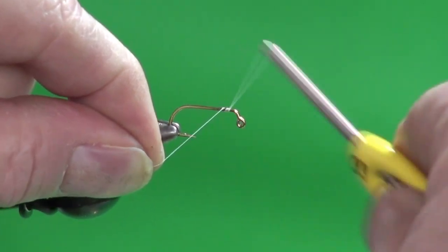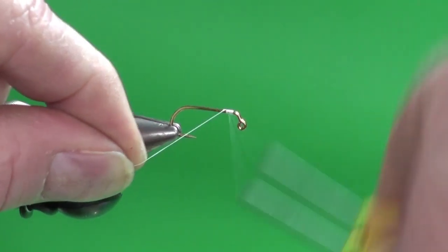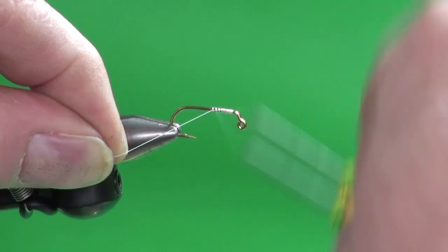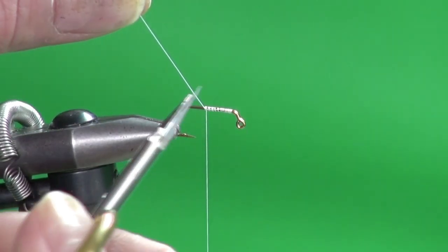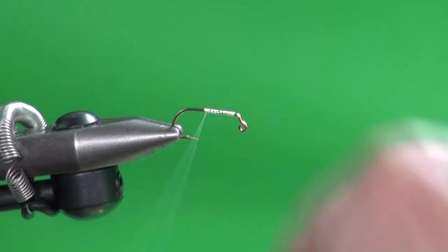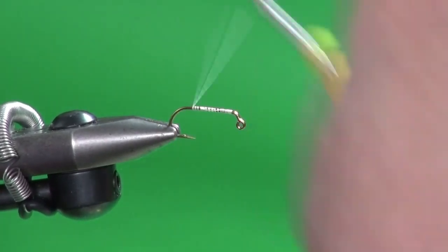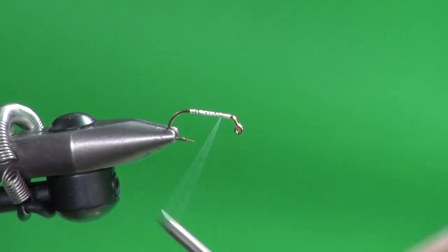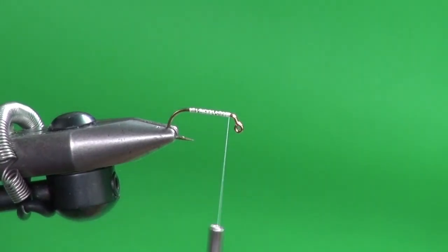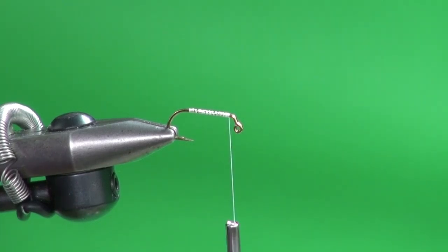So we're going to cover the hook shank with tying thread. White minnow, white fly, white thread. Get that started. We'll cover that shank and come back up because we're going to tie in the chassis. This is balanced.